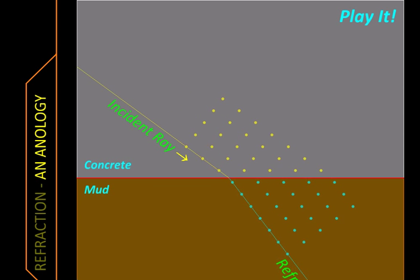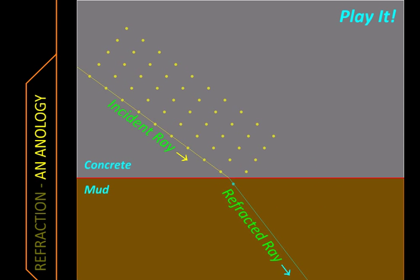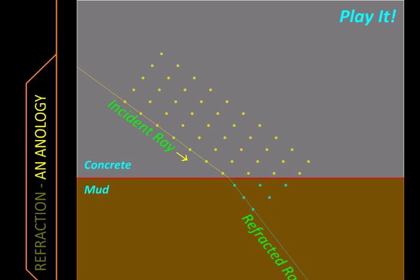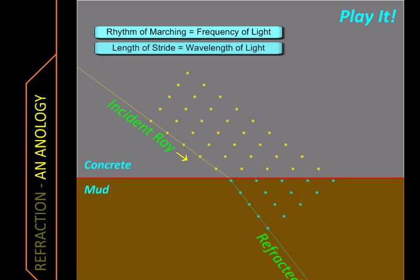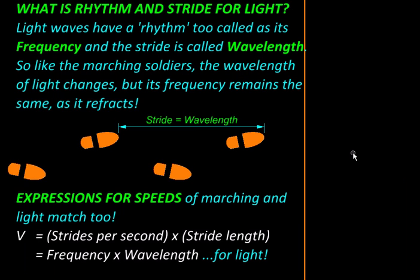Light does exactly the same thing. But what is rhythm of marching for light and what is length of stride for light? Well, the parallels are: the rhythm of marching is like frequency of light, and the length of the step or stride is like the wavelength of light. So just like the soldier keeps the rhythm and alters the stride, light waves keep their frequency but alter their wavelength when they get refracted as they cross over from one medium into another.